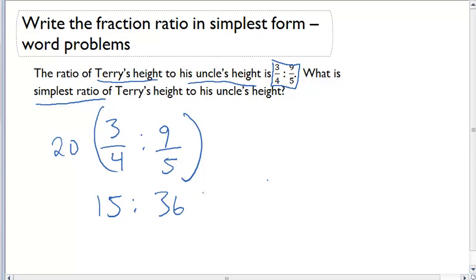Now that I have this ratio in whole numbers, I can finally simplify it. So now I have 15 to 36, both of these numbers are divisible by 3, and I'm going to get my new ratio of 5 to 9.